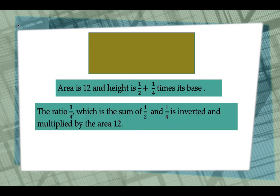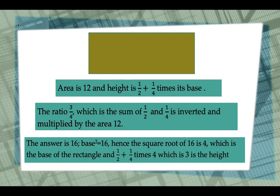To solve the problem, the ratio 3/4 which is the sum of 1/2 and 1/4 is inverted and multiplied by the area 12. Thus, the answer is 16. Base squared is equal to 16. Hence, the square root of 16 is 4 which is the base of the rectangle.